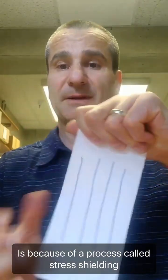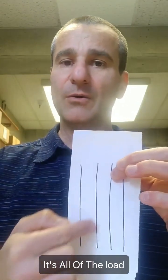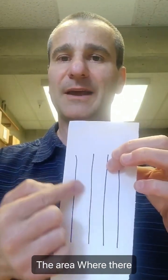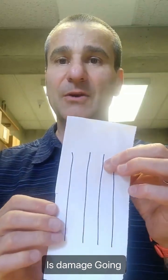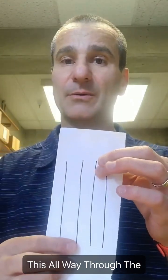The reason it doesn't is because of a process called stress shielding. Stress shielding means all of the load or the stress goes around the area where there's damage. Going around the area of damage means that we're protected from tearing this all the way through.